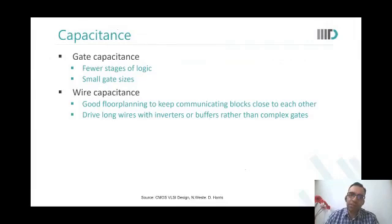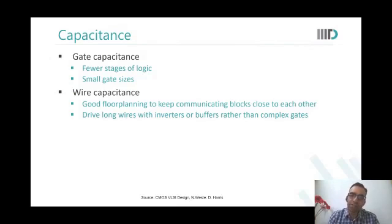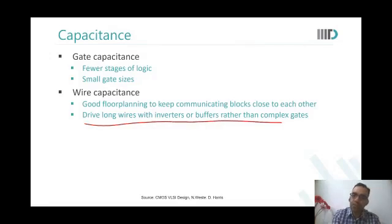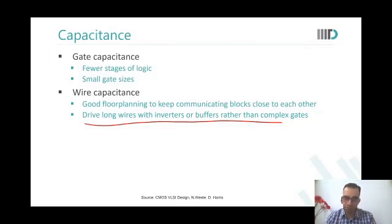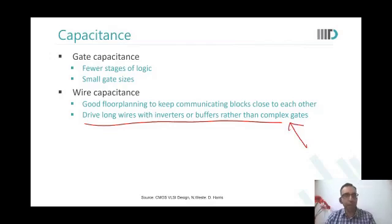To reduce capacitance, using the logical effort method we reduce the number of stages, use smaller gates, do good floor planning so that wire capacitance reduces. For large capacitances, place complex gates at the beginning and buffers or inverters at the end, so complex gates are not toggled too much. All these logical effort techniques can be applied to reduce overall capacitance.